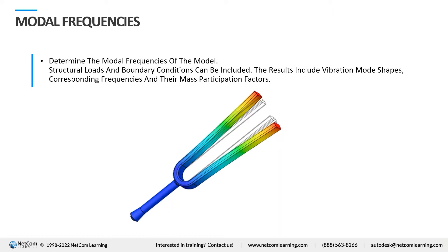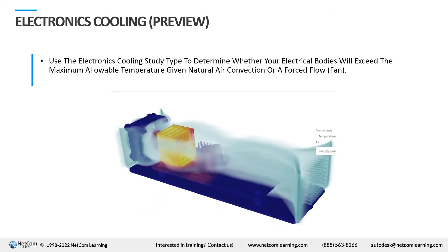Next is electronic cooling, which has just been introduced in Fusion 360. Electronic cooling is a tool that allows you to visualize the temperature and air movements within electronics assemblies. The target audience is someone who would like to predict the temperature of their electronics components and see the air movement in their designs. No prior simulation experience is needed — it's really easy in Fusion 360.